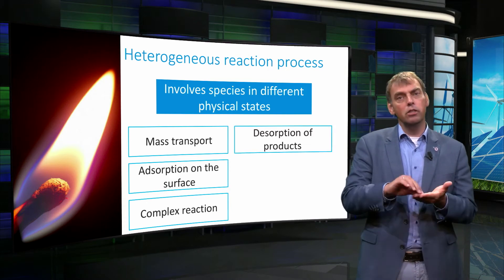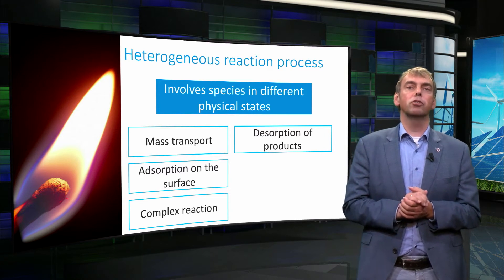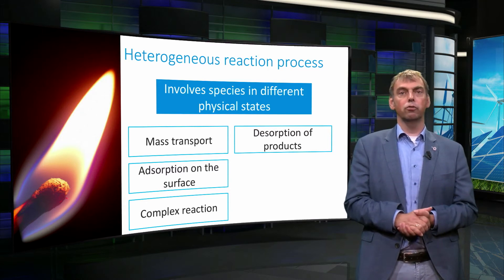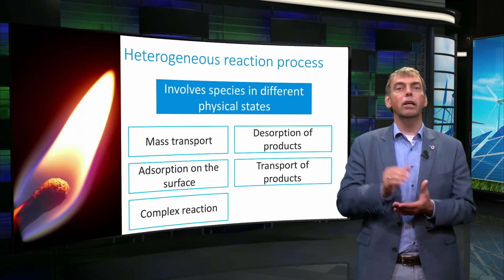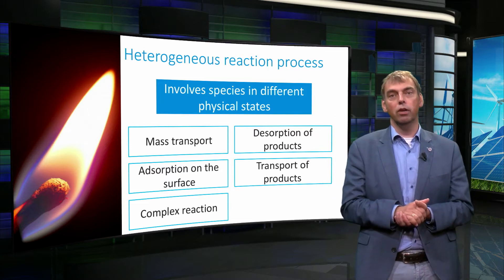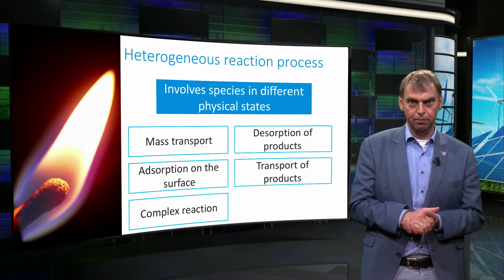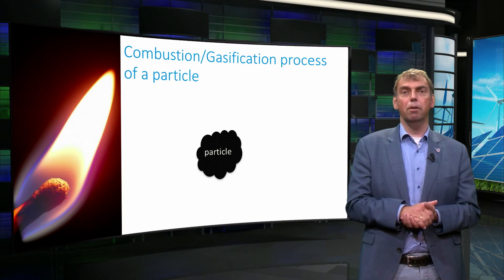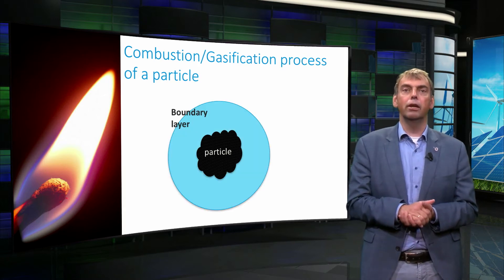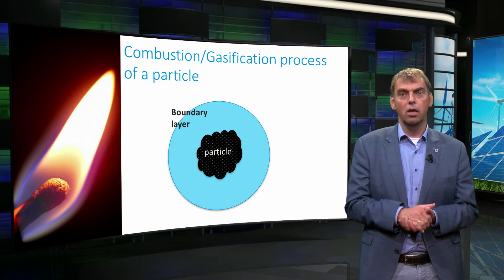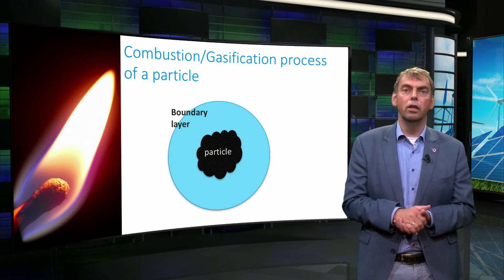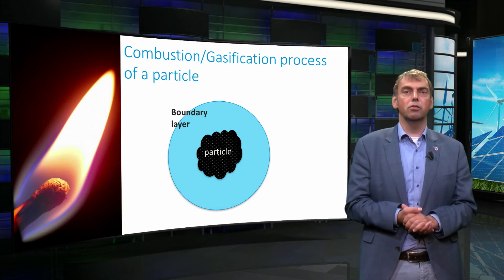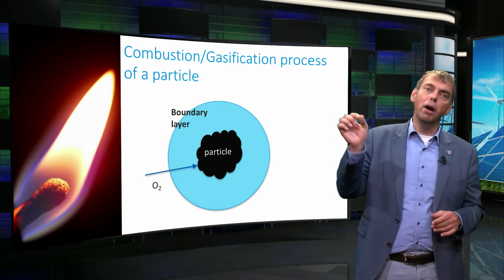Then, desorption of product molecules from the carbonaceous surface takes place. Finally, the transport of product molecules from the surface takes place, again via mass transfer mechanisms of convection and/or diffusion. The following picture depicts a solid char particle and a relatively thin boundary layer around the particle. By devolatilization, the particle has released complex volatile matter.